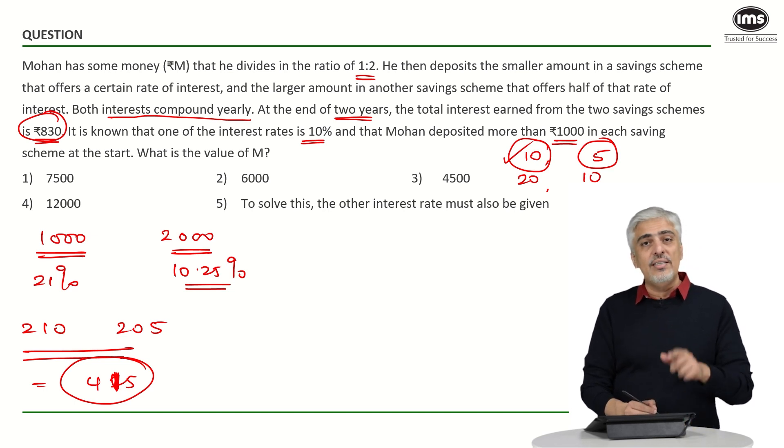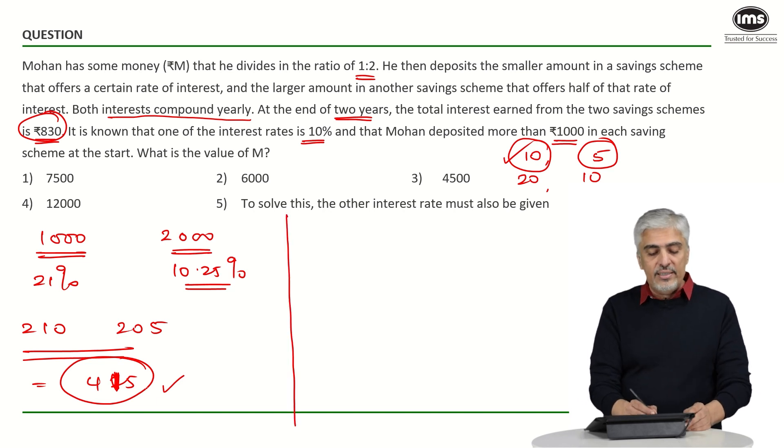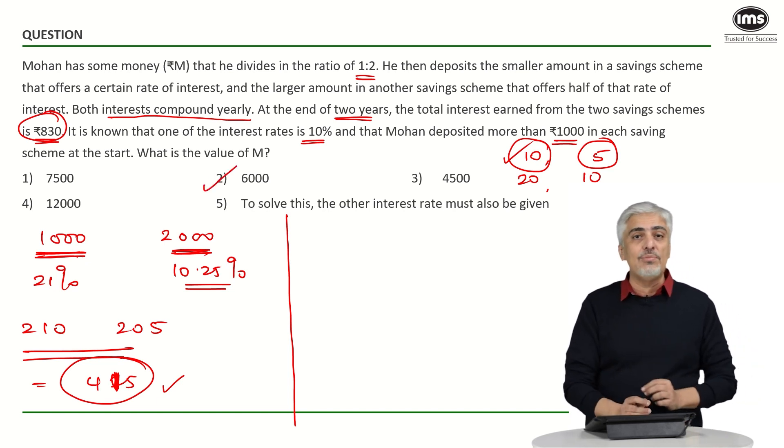If you notice the total interest earned is 830 is exactly double of this. At this stage you should have clearly thought that you have hit the miracle. You know you have hit the miracle method that this is exactly double just double up everything and that is your answer. The investment over here I have taken is 3000 because my answer is coming double the answer has to be 6000. This is what I would have done in an exam situation.